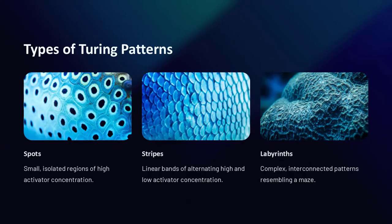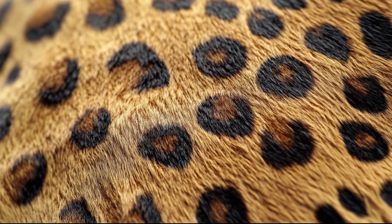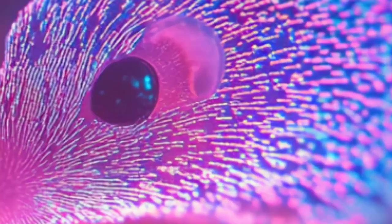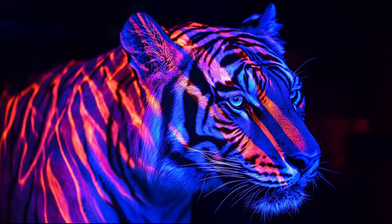The main pattern types are: spots — small, isolated regions of high activator concentration; stripes — linear bands of alternating high and low activator concentration; labyrinths — complex interconnected patterns resembling a maze; and waves — travelling patterns that oscillate over time. These patterns depend on the initial conditions and the relative strengths of the reaction and diffusion terms.